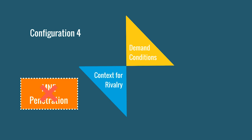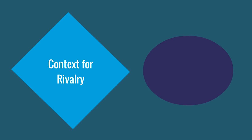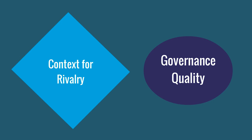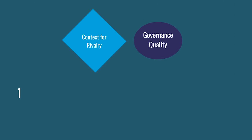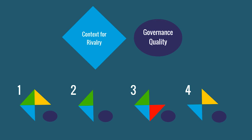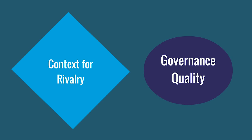Interestingly, context for rivalry and governance quality are present in each of the four identified configurations, indicating their centrality in achieving high national competitiveness. However, these two elements by themselves are not sufficient for high national competitiveness.